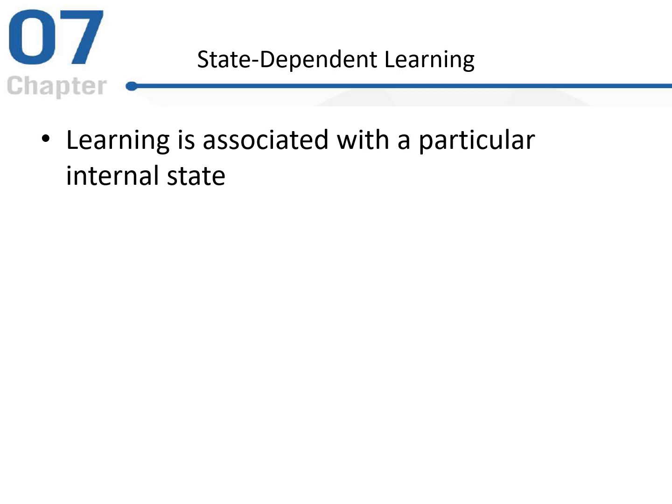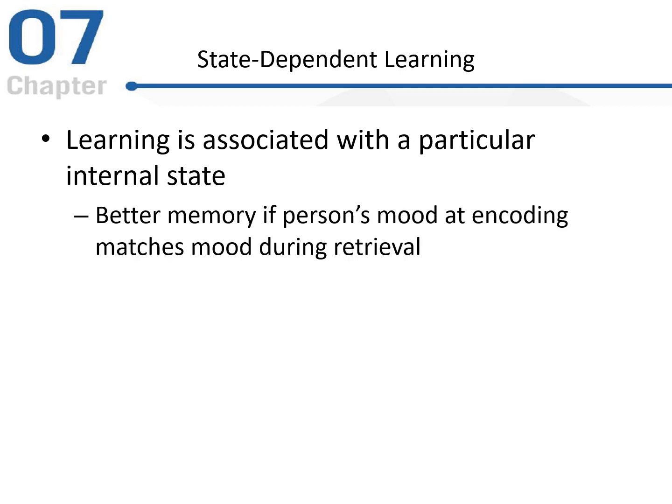Kind of similar but a bit different, we can look at state-dependent learning. This is where we're focusing on your internal state when you learn something. The suggestion is that if your emotional state when you have to retrieve information is similar or the same as it was when you encoded that information, you're likely to be more successful at retrieval. For example, if you're happy during encoding and happy during retrieval, you're likely to do better than if you were happy during encoding and then angry during retrieval.